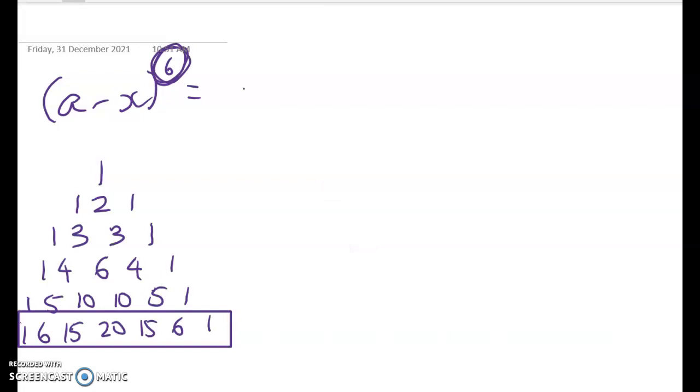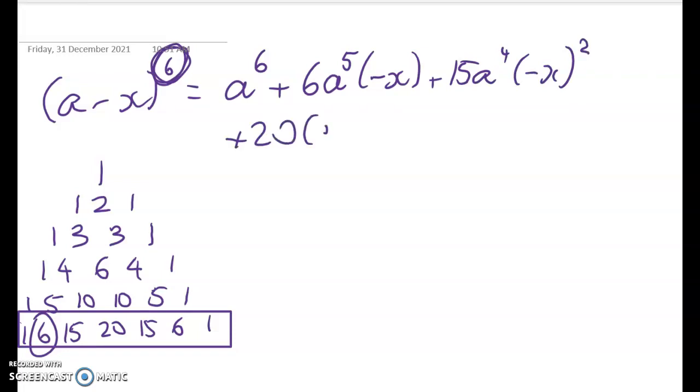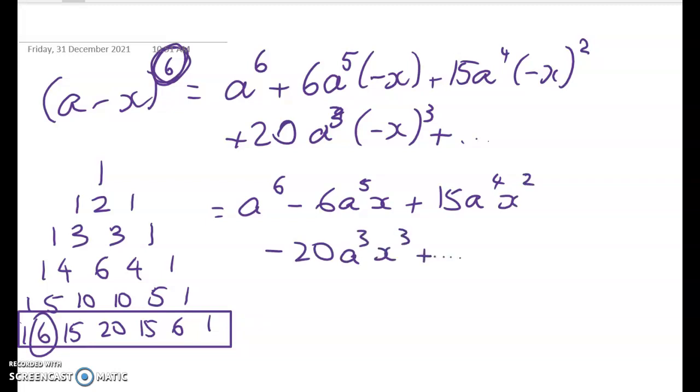(a - x) to the power of 6 will be a to the power of 6 plus 6 times a to the 5 times negative x, plus 15a⁴ times negative x squared, plus 20a³ times negative x cubed. How far do I have to go? I have to go to—oh there's four terms, so we're done. Dot dot dot is all I've got to do here. Now I'll clean that up: a⁶ - 6a⁵x + 15a⁴x² - 20a³x³ dot dot dot. That's the first part done.